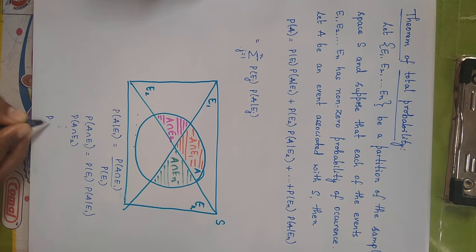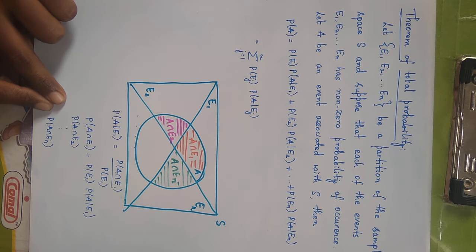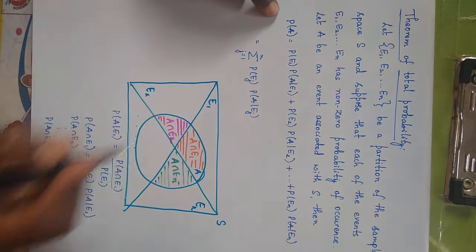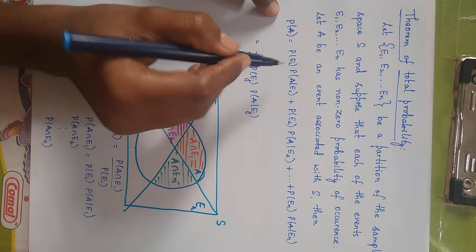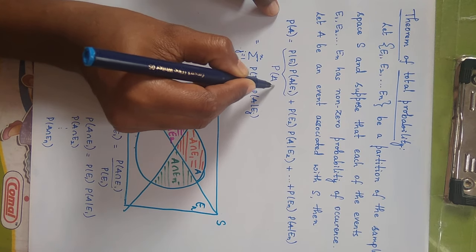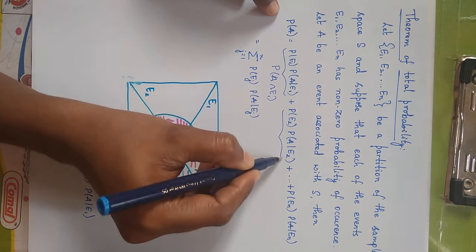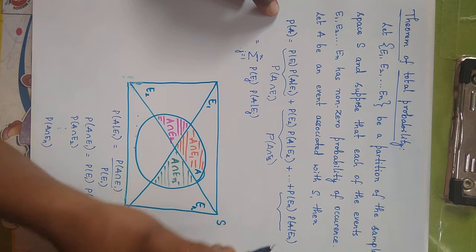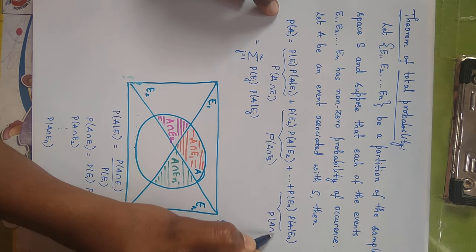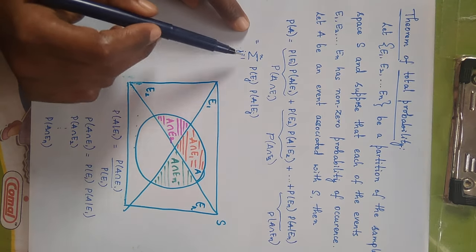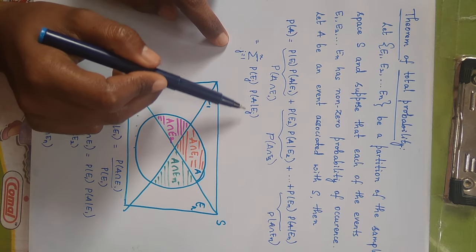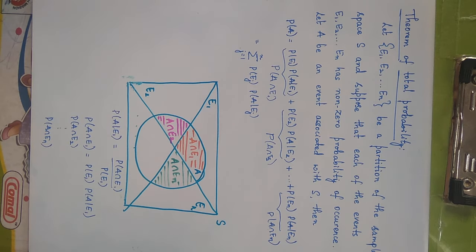We sum up all these probabilities to get P(A). So P(A) = P(A intersection E1) + P(A intersection E2) + ... + P(A intersection En). Writing this in compact form, we have: summation where j runs from 1 to n of P(Ej) × P(A|Ej).